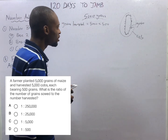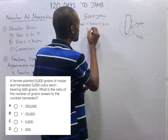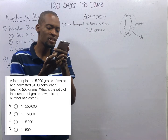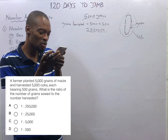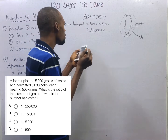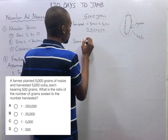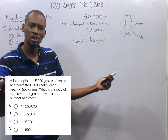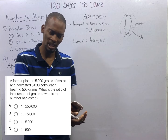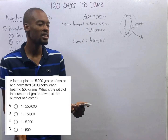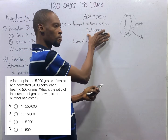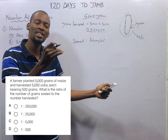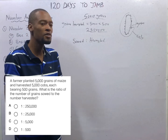That gives you 2.5 million total grains harvested. The question asks: what is the ratio of the number of grains sowed to the number of grains harvested? When dealing with ratio, both quantities must be in the same unit — you can't do ratio of meters to centimeters. That is why we converted cobs to grains — so that both sides are in grains.